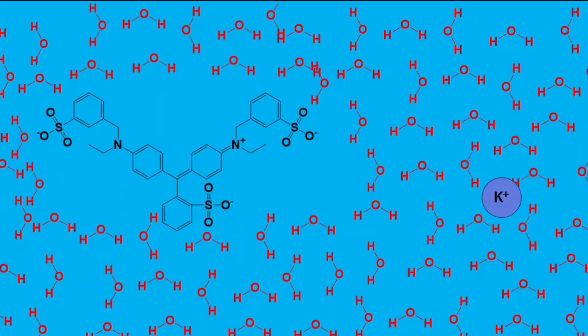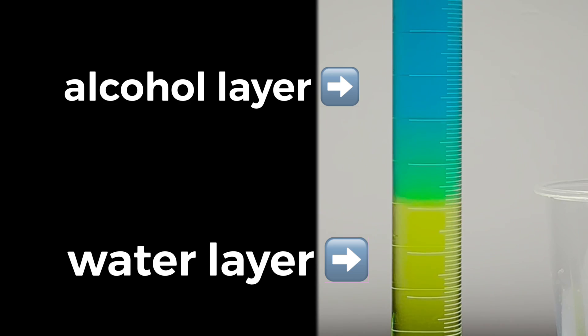So it tends to be easier for smaller molecules and ions to dissolve in water than large ones. Because of this, the smaller yellow dye molecules will dissolve better in water than the larger blue ones.